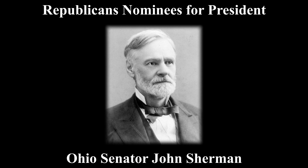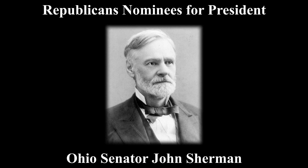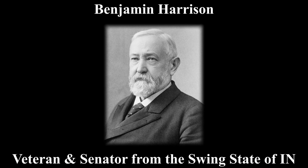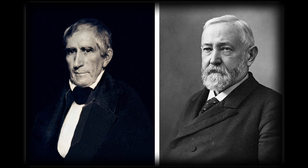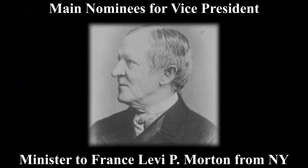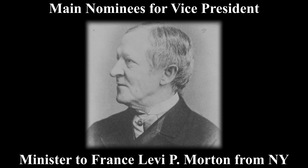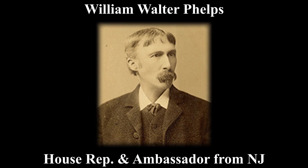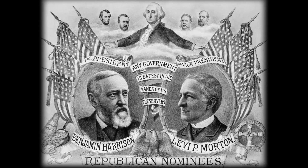For the election, the Republicans' nominees for president were Ohio Senator John Sherman, with the other nominees being veteran Michigan Governor Russell Alger and Benjamin Harrison, veteran and senator from the swing state of Indiana — the grandson of ninth president William Henry Harrison. For vice president, the nominees were Minister to France Levi P. Morton from New York and Austria-Hungary Ambassador William Phelps from New Jersey. Harrison and Morton ultimately won their respective nominations in 1888.